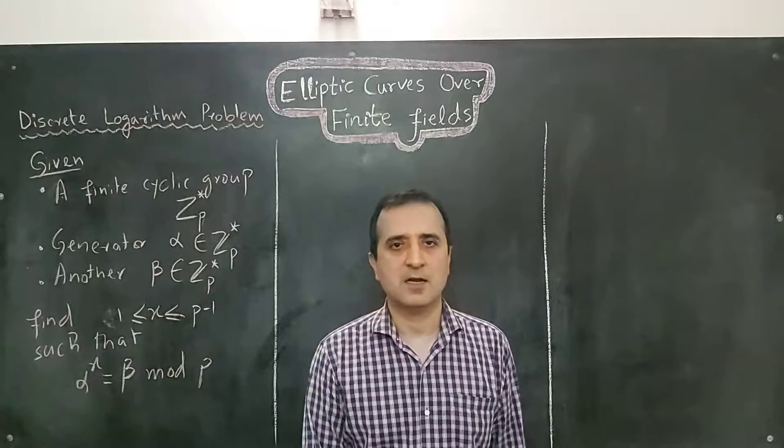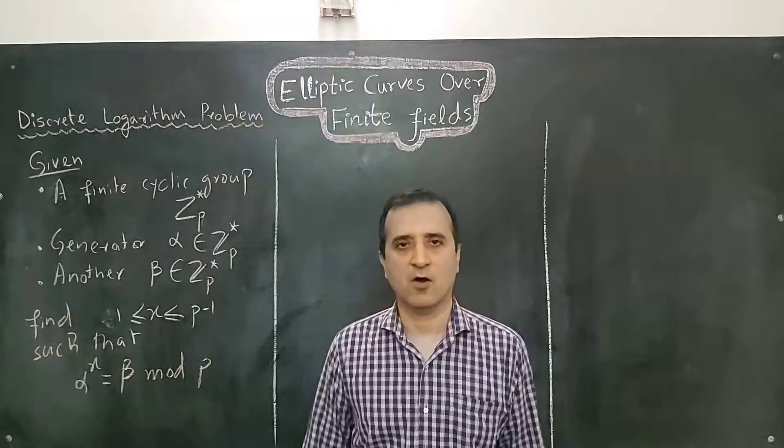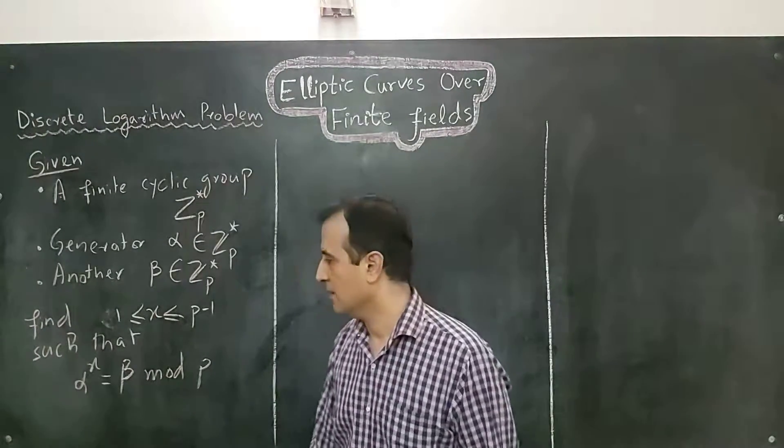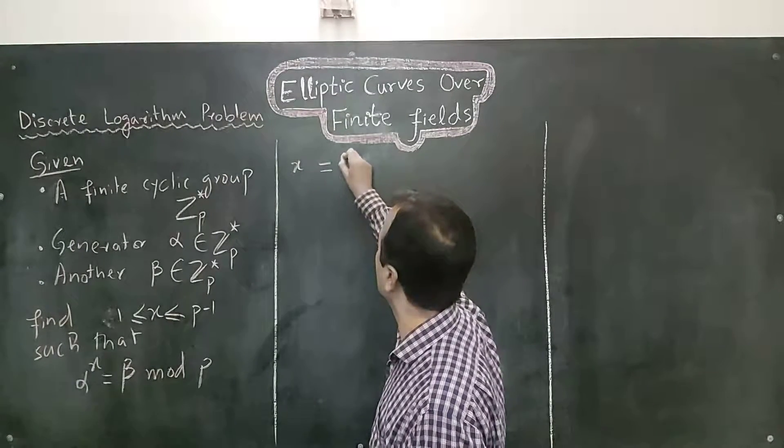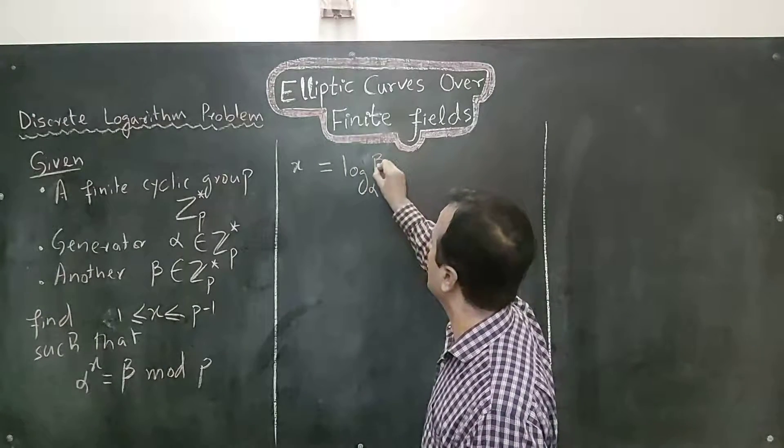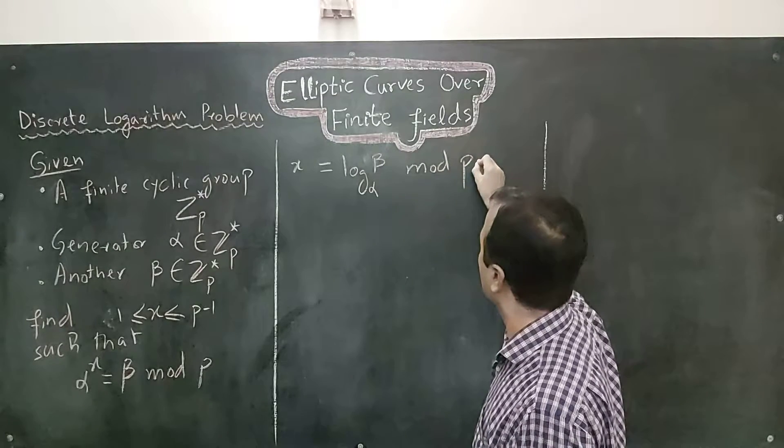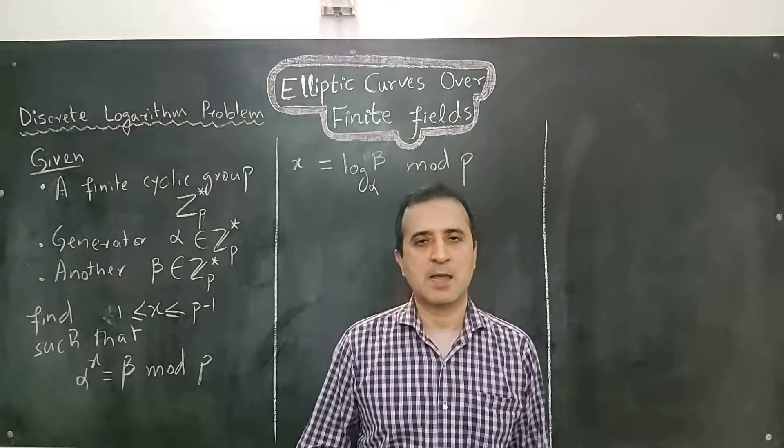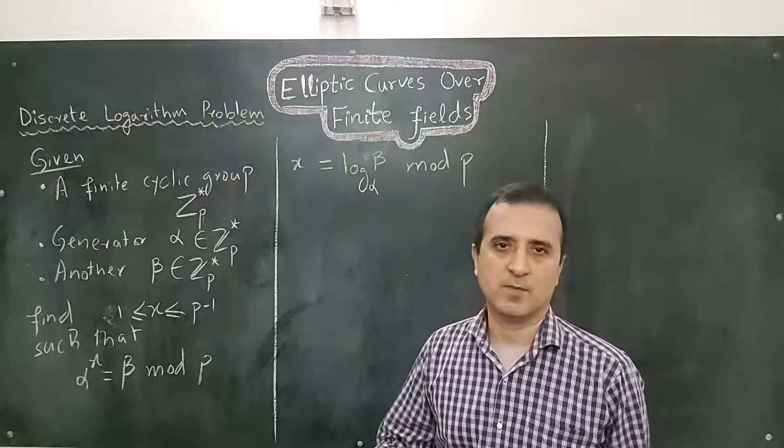The problem is called discrete logarithm problem because we can solve this problem by taking log. So, if we take log base alpha both sides, then we will have x equals log base alpha beta mod p. But the log function has exponential time complexity. Therefore, this is a classical one-way problem.